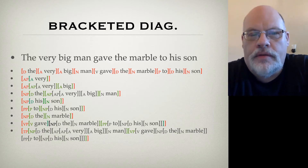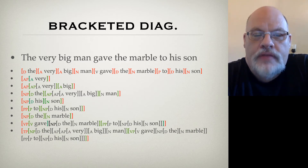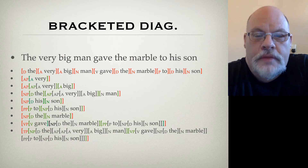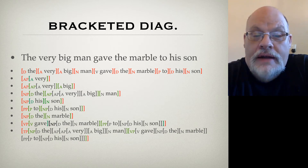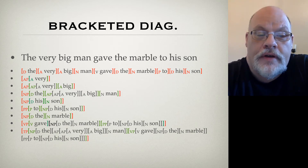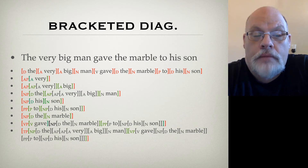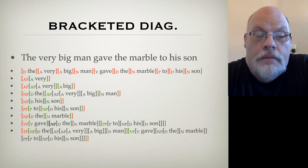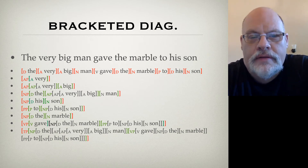Let's now briefly talk about how you would construct the bracketed diagram for this same sentence. You can pause this video and have a look at each step as we go. The top step is identifying the parts of speech. At each level, you'll notice red parentheses — these are the brackets added at each step. You identify the parts of speech, then the adjective and adverb phrases, then the NPs, then the PPs, then the verb phrase, then the whole sentence.